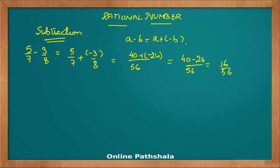I can reduce this as 8 times 2 is 16 and 8 times 7 is 56, giving me 2 by 7. So this is how we can do subtraction. The rule for subtraction is add the additive inverse.